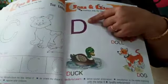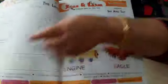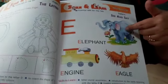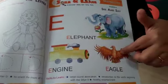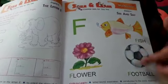D, doll, duck, dog. E, elephant, engine, eagle. F, fish, flower, football.